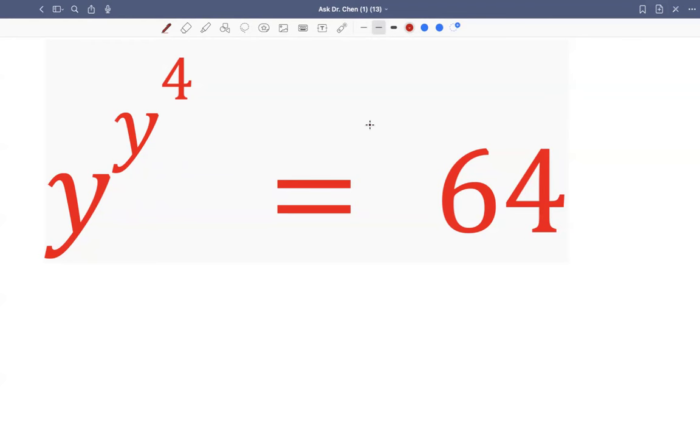What we could do is first raise both sides to the fourth power. In this case, we see the exponent, so we have two layers of exponents. This is y raised to the fourth, which is the exponent of y.